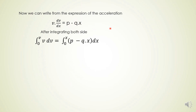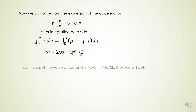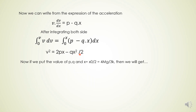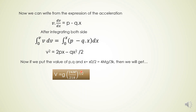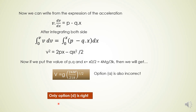Integrating both sides with limits 0 to v and 0 to x gives v squared equals 2px minus qx squared by 2. Substituting the values of p, q, and x equals x0/2 which equals 4mg by 3k, we get v equals g times root over (24m by 21k). This does not match the expression given in option A. Therefore, only option D is correct.